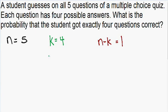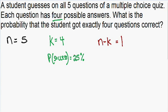Now let's talk about the probability of success, or the probability that a student gets a question correct. The problem states that each question has four possible answers, and only one of those four is correct. So if the student guesses, there's only a one in four chance of getting the question correct. The probability of success is equal to one in four, or 25%. Since the probability of success and failure must equal 100%, the probability of failure — the probability the student got the question wrong — is equal to 75%.